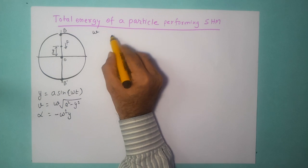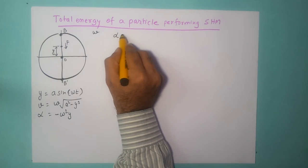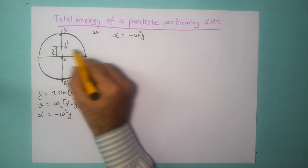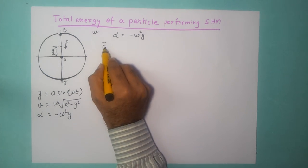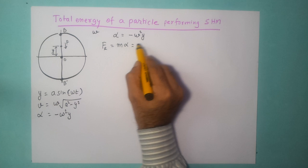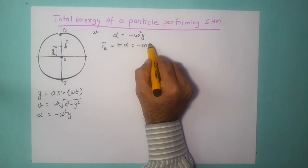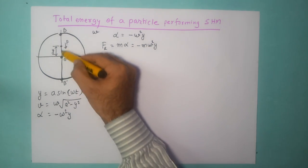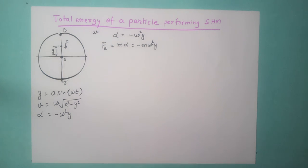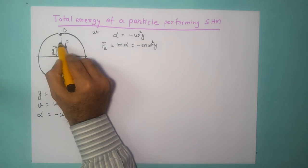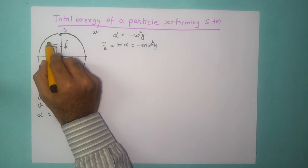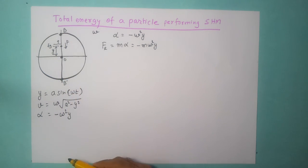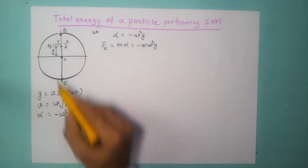The acceleration of this particle when it is at y is given by alpha equals minus omega squared y. Therefore the restoring force Fr is equal to mass into acceleration, which is minus m omega squared y. This is the restoring force acting on the particle trying to bring it towards the equilibrium position. Now let us say this particle moves an infinitesimally small distance delta y in this direction towards point B.